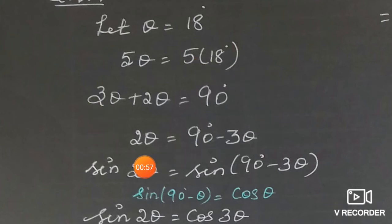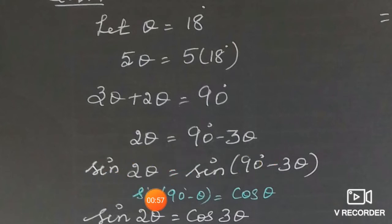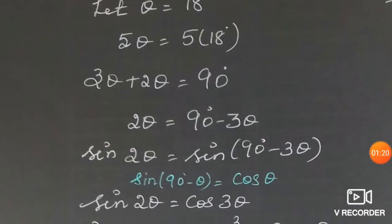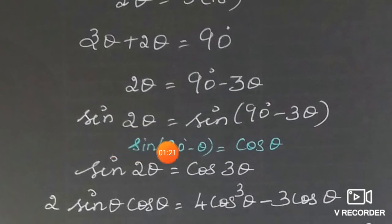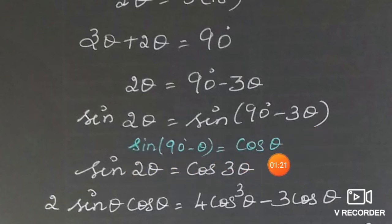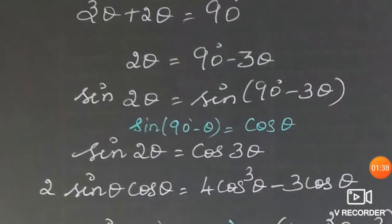So we have 2θ = 90° − 3θ. Now apply sin on both sides — we are asked to find sin 18°, so we apply the sine function on both sides. So sin 2θ = sin(90° − 3θ). Using the formula sin(90° − θ) = cos θ, we get sin 2θ = cos 3θ.